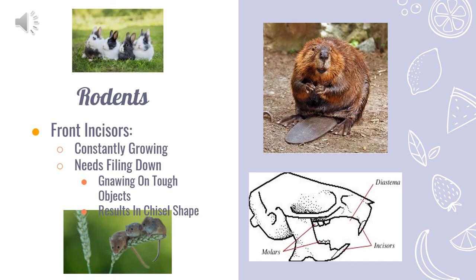With rodents, they put their focus on their molars, but especially their incisors, which constantly grow from birth to death. Because of this, they must use their large growing teeth to gnaw on objects to keep them manageable. Most rodents take advantage of this trait to do tasks like chopping down a tree or creating a passageway. The way they gnaw typically results in a sharp chisel shape.